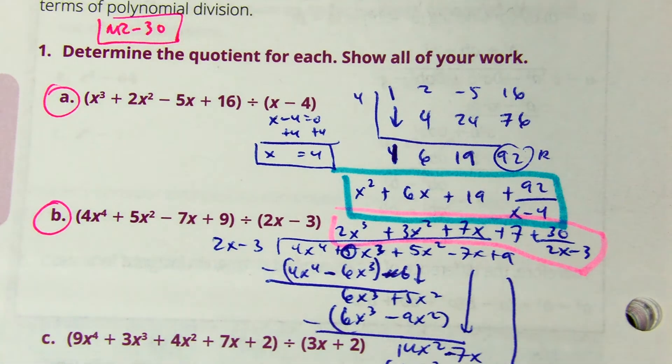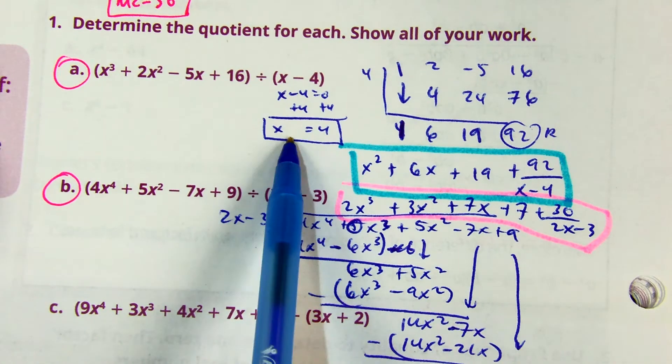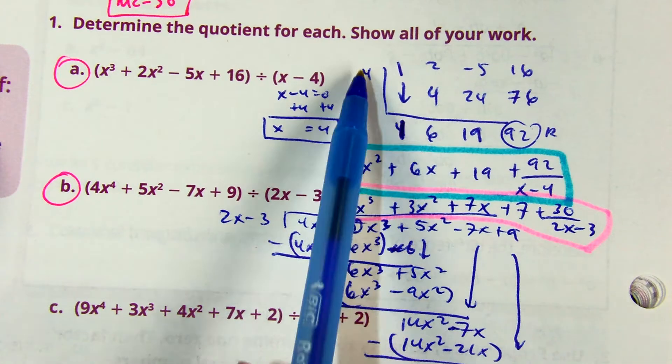I chose to show synthetic division for the first problem. Set it equal to 0, x equals 4 goes on the outside, bring down, multiply, add down.